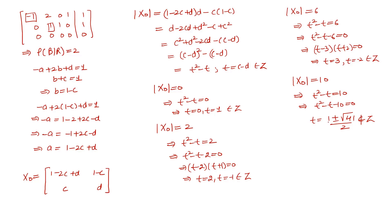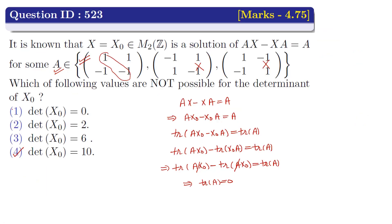In this question we had to find which value is not possible for the determinant of x0. Hence, det(x0) cannot be 10. Therefore option 4 is the correct answer, and options 1, 2, and 3 are false. Thank you very much for watching. If you like the content, please like, share, and subscribe. If you have any query, comment below. Thank you very much.